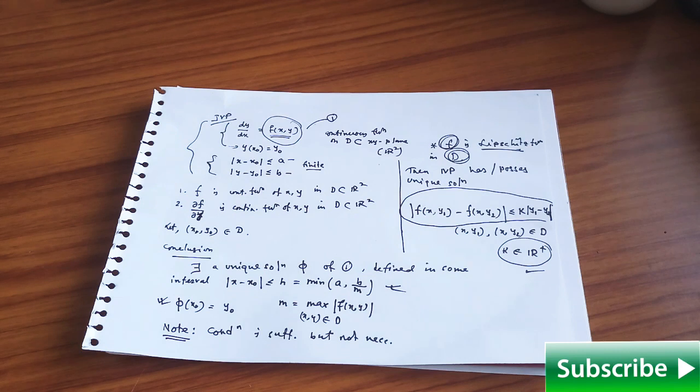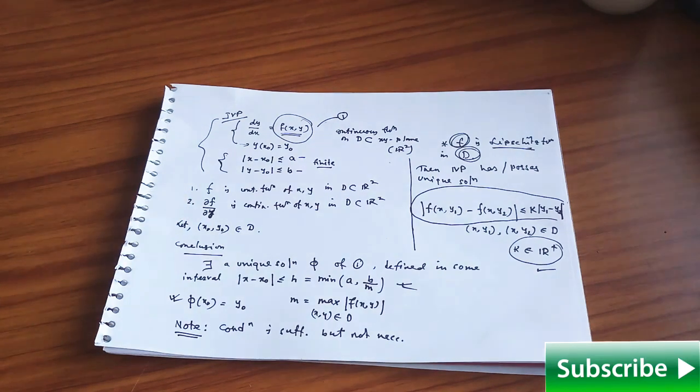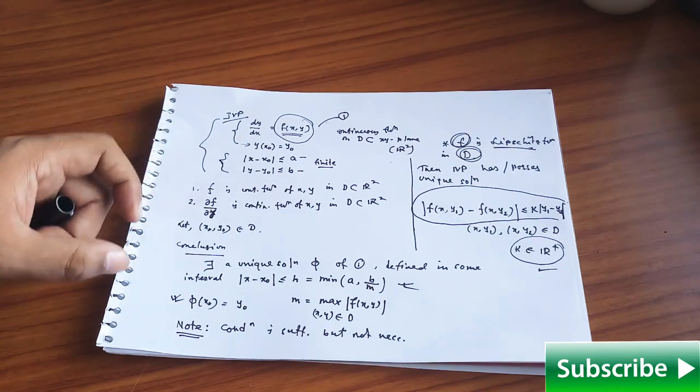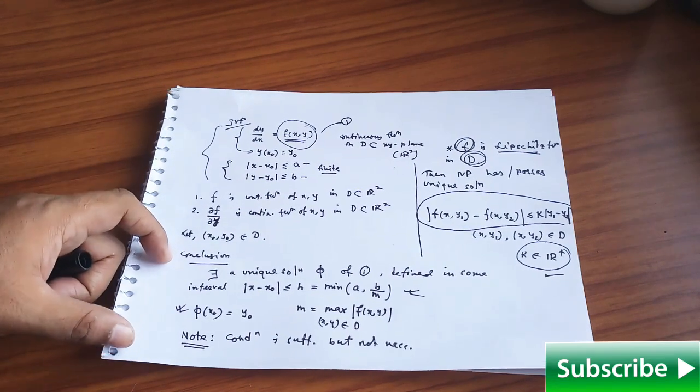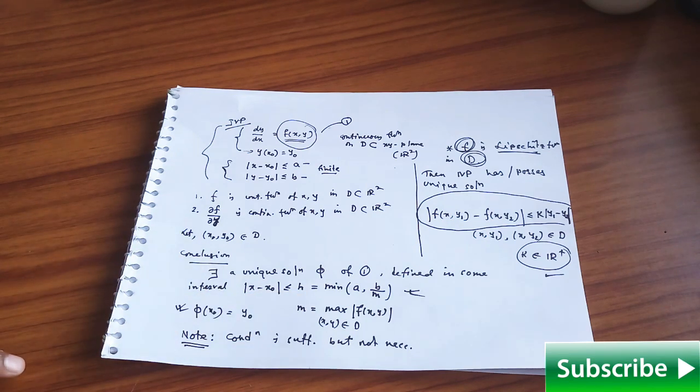It must be del f del y type of thing and whenever we solve this kind of problem you will stuck some point of view when if we consider del f del x you will stuck definitely stuck. In other words it is exactly del f del y must be continuous function of x y in that given domain and everything except that it is fine, no problem. These are your assumption or hypothesis and this is your conclusion that solution will exist in certain interval and interval is given like this way.